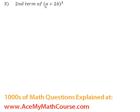Okay, so let's find the second term of the expansion (a + 2b)^5, and we'll be using this formula: